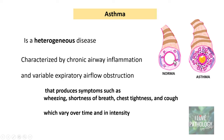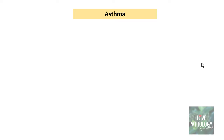That is the normal bronchi and this is the asthmatic bronchi for comparison. In this illustration itself we can make out that there is a moment of inflammation and there is a luminal obstruction by probably mucus secretion. We will discuss this in detail a bit later.